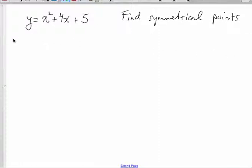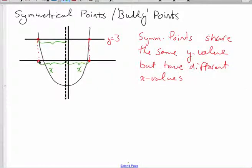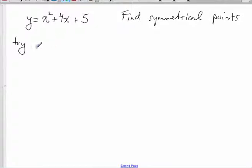Now, the idea behind using buddy points is that I can use any y value I want. Pick any y value you want, and the idea is that you're going to solve to find the two x values that correspond to that y value. Okay, so let's pick a number. Let's try y equals 3. Okay, so in my equation, I'll change y to a 3, and I'm left with x squared plus 4x plus 5.